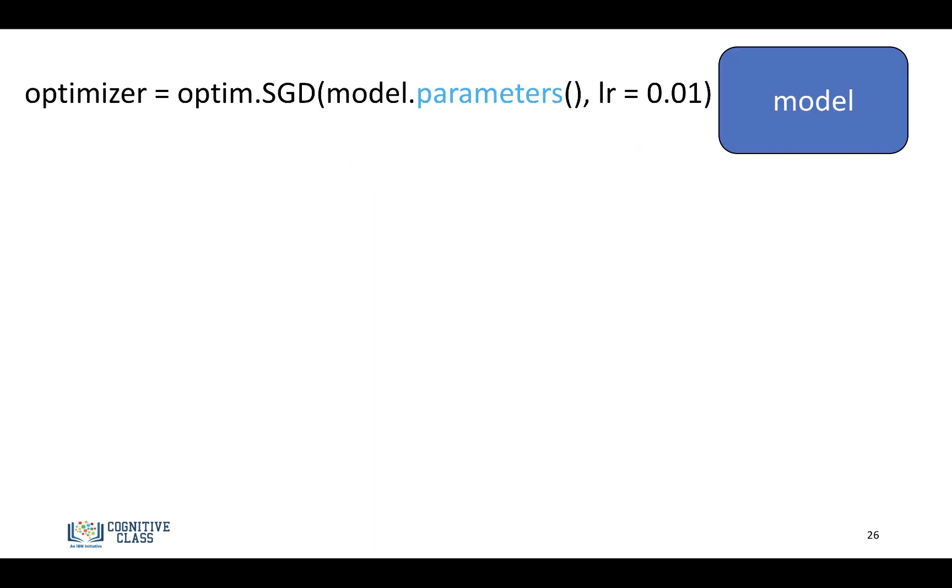So, everything else is pretty much the same as Softmax, or a regular neural network. Because it's multiple classes, we'll create a cross-entropy loss. We'll create an optimizer, and our input will be the model.